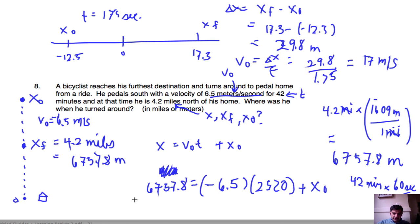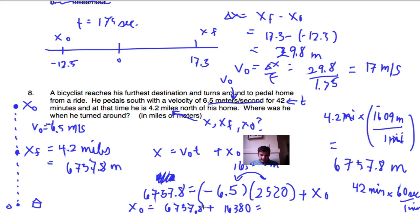So now we go ahead and we calculate x0, and that's going to end up being 6,757.8 plus this thing multiplied together. So when I go ahead and multiply 6.5 times 2,520, that actually ends up giving me 16,380 meters. And when I add that to 6,757.8, I end up getting 23,137.8 meters. And if you want to convert that into miles, I won't tell you how I did that. So that's actually a good problem. And we'll move on to the next page in a second.